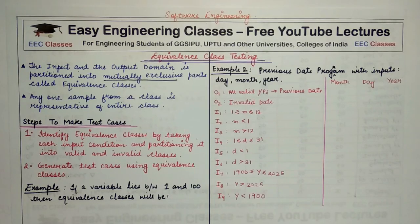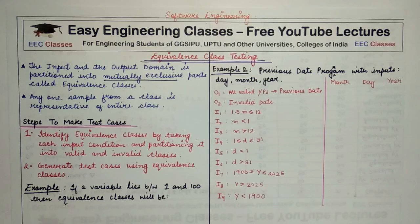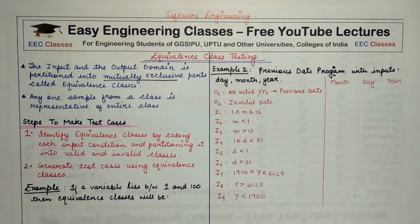For example, if the valid input range is 1 to 10, then one equivalence class is the valid input range (1 to 10). A second equivalence class is values less than 1 — this is an invalid class. A third equivalence class is values above 10, which is another case of invalid inputs greater than 10. These three sets of values are disjoint and segregate the input domain into partitions that do not overlap.